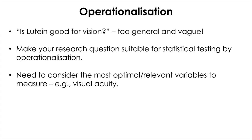In doing so, we need to consider the most optimal or relevant variables to measure to answer the research question. For example, visual acuity can be one aspect of vision. Then we can say that having a better visual acuity can be a good thing for vision, or vice versa.